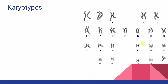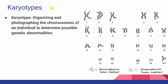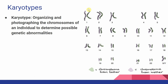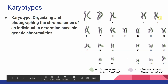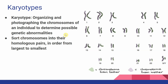The last thing we're going to talk about today is how scientists analyze genetic information and look at chromosomes. The main tool scientists use is called karyotypes. A karyotype is the process of organizing and photographing the chromosomes of an individual to determine possible genetic abnormalities. Scientists take a picture of chromosomes and sort them to see if genetic information looks normal. Our chromosomes are numbered and sorted into homologous pairs, ordered from largest to smallest.